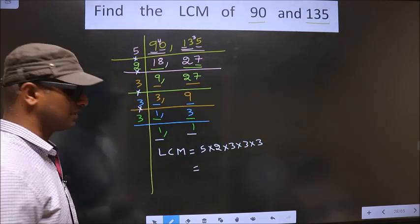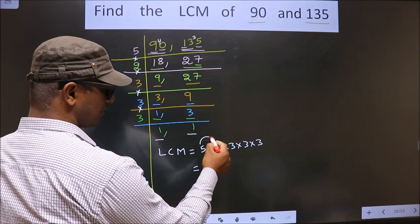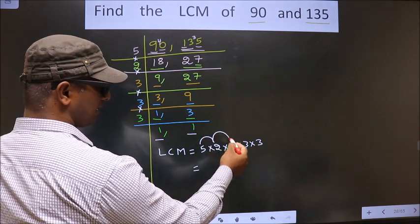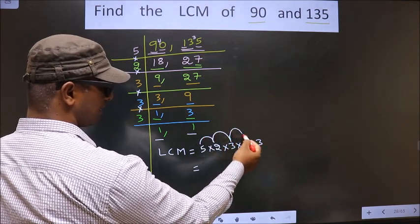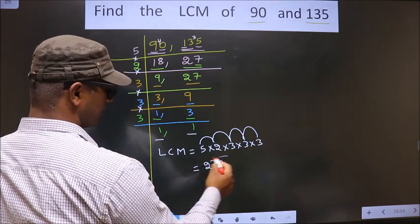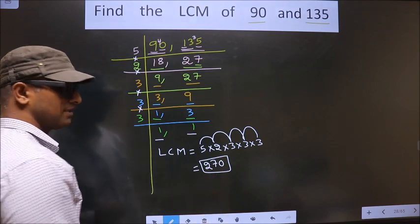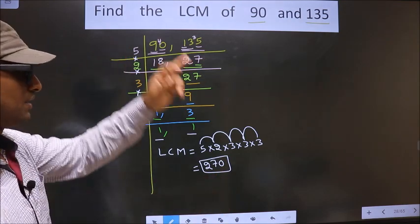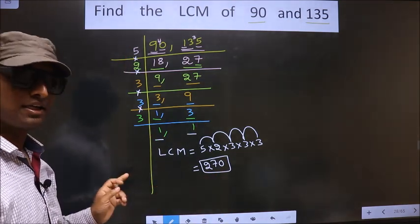So let us multiply. 5 into 2, 10. 10 into 3, 30. 30 into 3, 90. 90 into 3, 270. So this is our LCM. Am I clear?